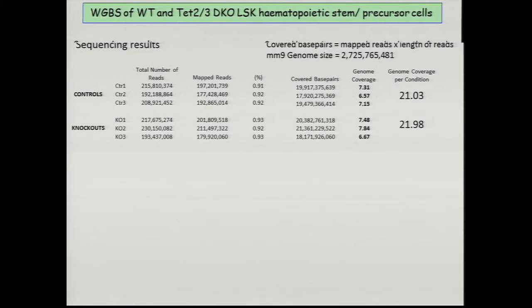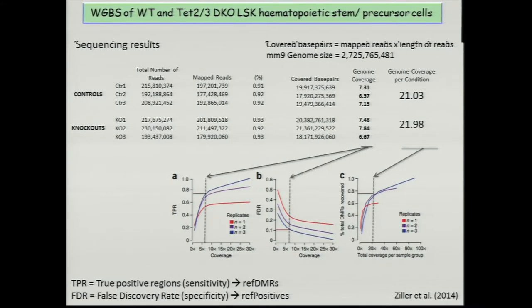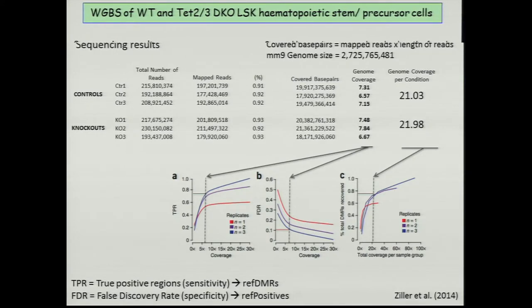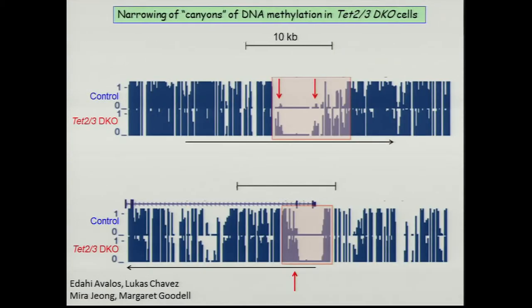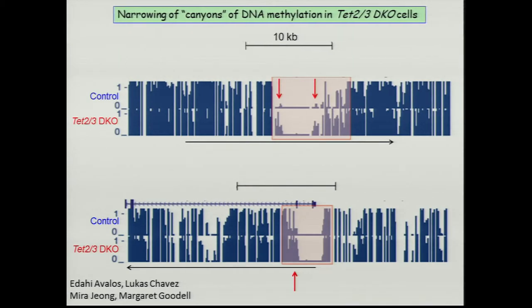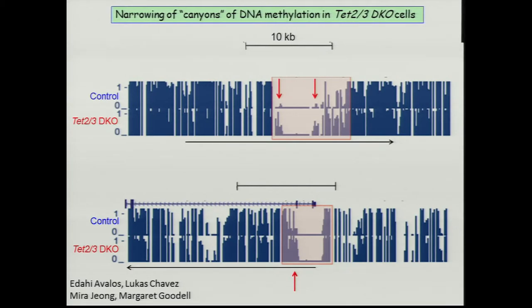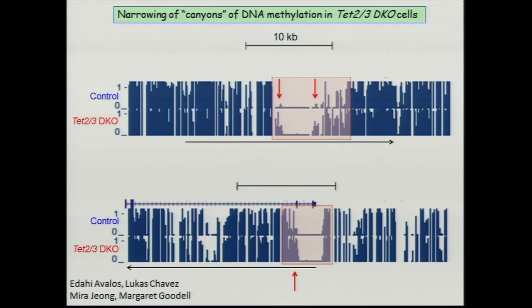Our choice of coverage was validated by a Nature Methods paper indicating you need at least two replicates and a certain depth of coverage. What we find is that the canyons of DNA methylation — terminology used by Peggy Goodell — or what Bing Ren has called valleys of DNA methylation, some of which correspond to CpG islands in the genome, do in fact shrink in TET knockouts by gaining extra methylation at the edges. This has been called methylation of CpG island shores.